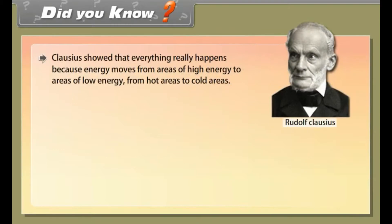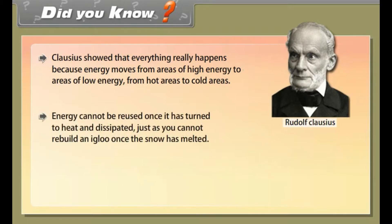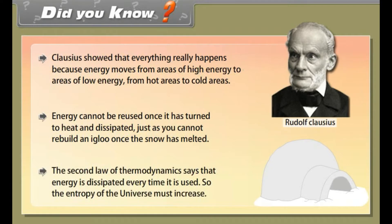Clausius showed that everything really happens because energy moves from areas of high energy to areas of low energy — from hot areas to cold areas. Energy cannot be reused once it has turned to heat and dissipated, just as you cannot rebuild an igloo once the snow has melted. The second law of thermodynamics says that energy is dissipated every time it is used, so the entropy of the universe must increase.